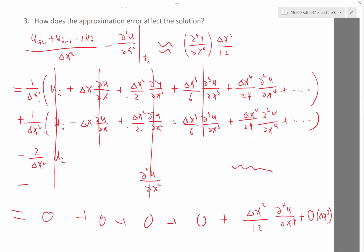So this kind of scheme we call second-order scheme. A second-order scheme means the leading term in the approximation error is proportional to delta x to the second power.